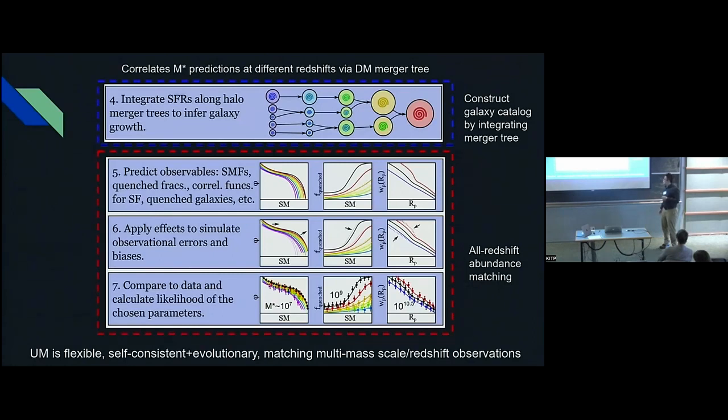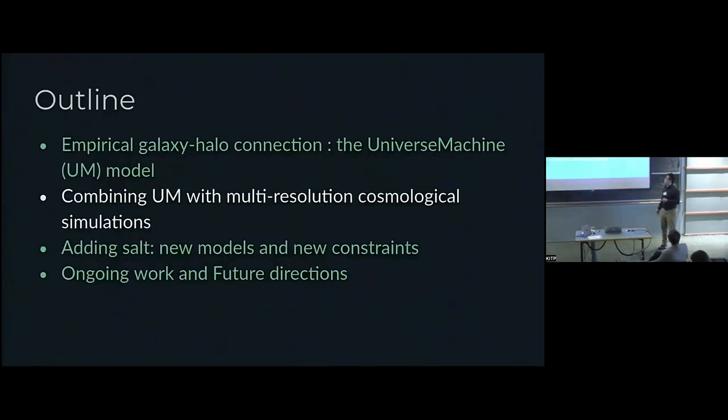The observations that went into the original UniverseMachine VR1 model only had some constraints on dwarf galaxies down to 10 to the seven from the stellar mass function, and everything else about their specific star formation rate, quench fractions, and clustering, they all go above 10 to nine. So it's really constrained down to the LMC regime. We just wanted to see if we apply this model directly to high resolution zoom-in simulations, what would happen?